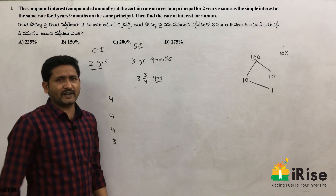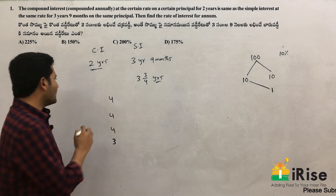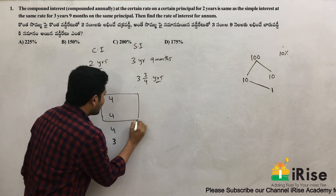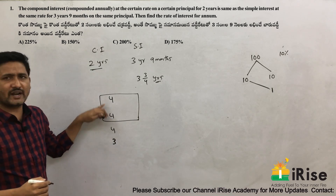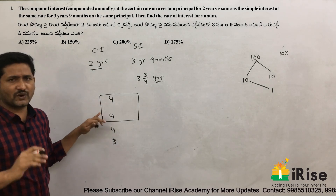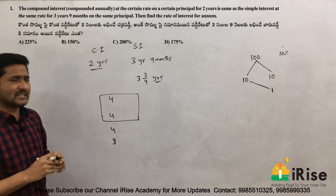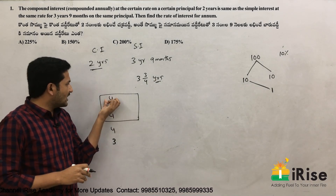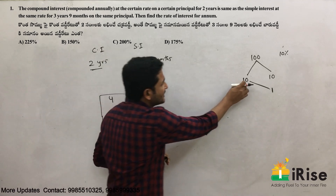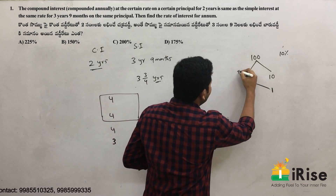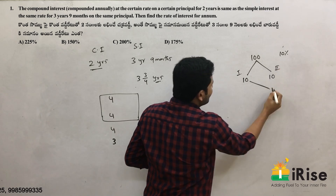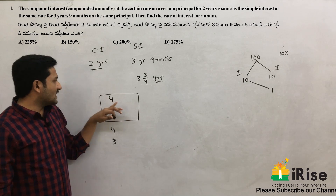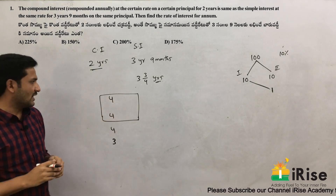Now the compound interest for 2 years must also equal 15 units. The 2 years' simple interest portion is 4 + 4 = 8 units. In compound interest, the second year you also pay interest on the first year's interest. So that extra amount on top of 8 units accounts for the difference.